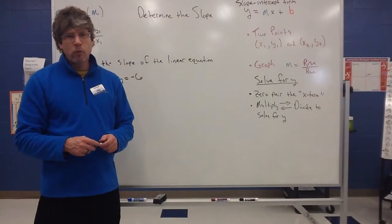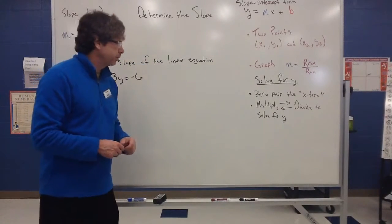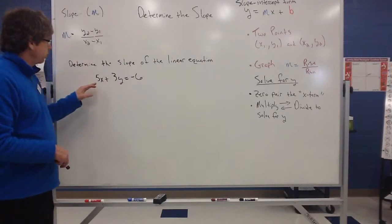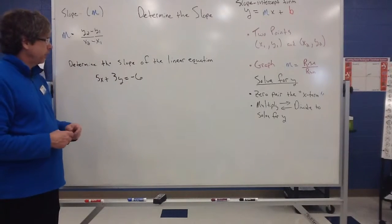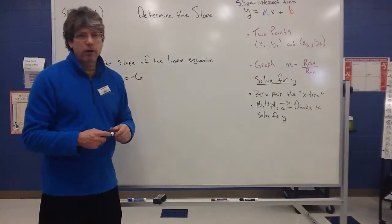So I believe we're going to do one more example involving determine the slope of an equation. I've got an equation in the form of 5x plus 3y is equal to negative 6. My directions are basically to determine the slope of this equation.